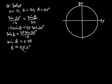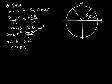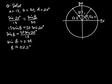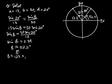Remember, inverse sine always gives an angle between negative 90 and positive 90. There's another angle between 0 and 180 with the same sine value — that angle is 180 minus 52.11 equals 127.89 degrees. So B could also be approximately 127.89 degrees — that's the second possibility the calculator didn't tell us about.